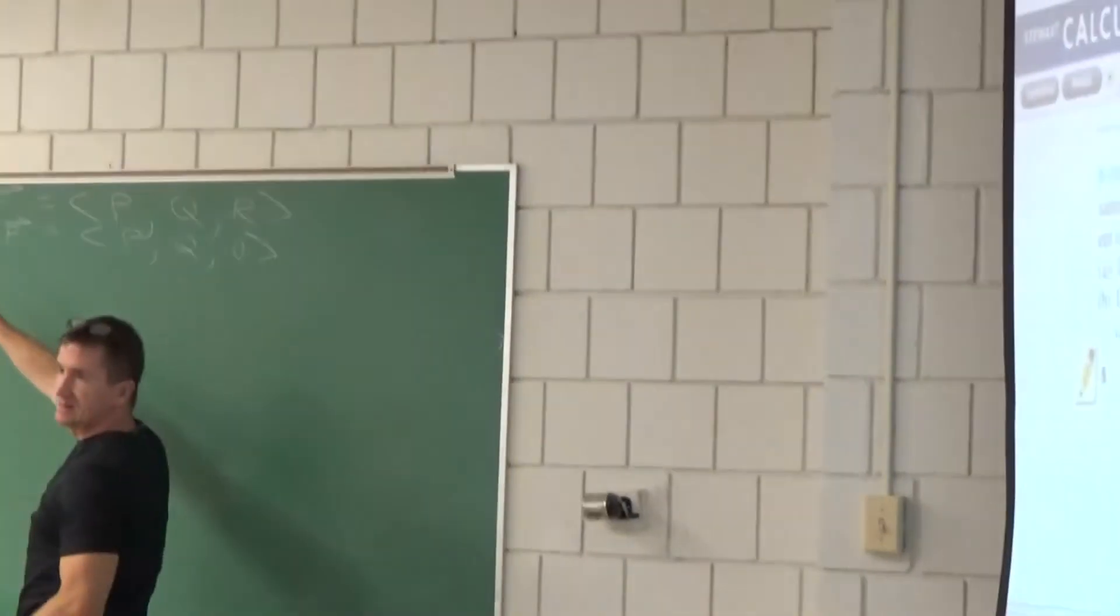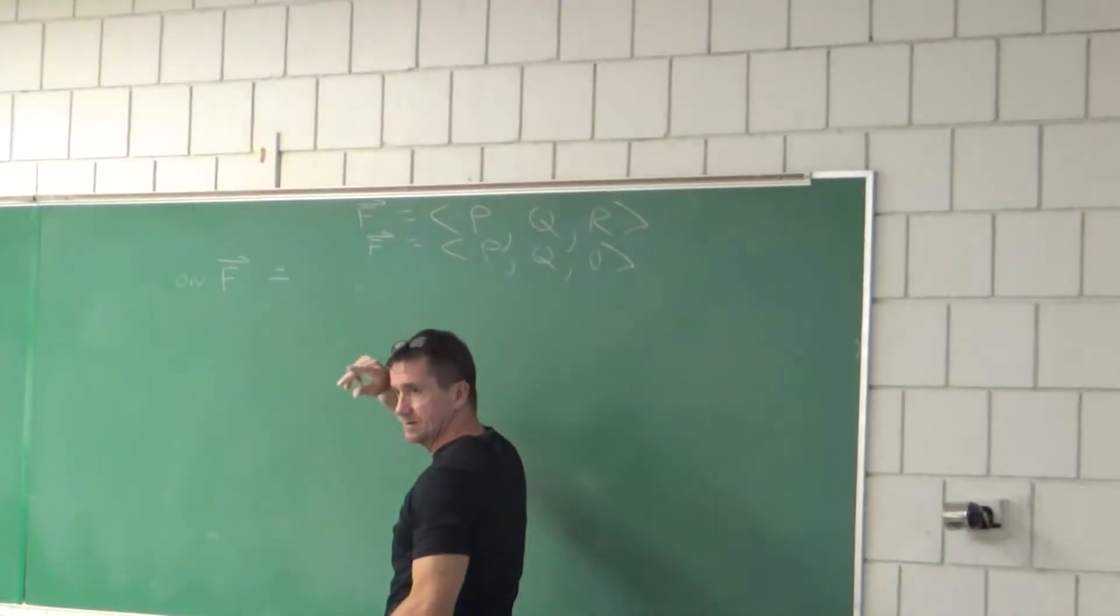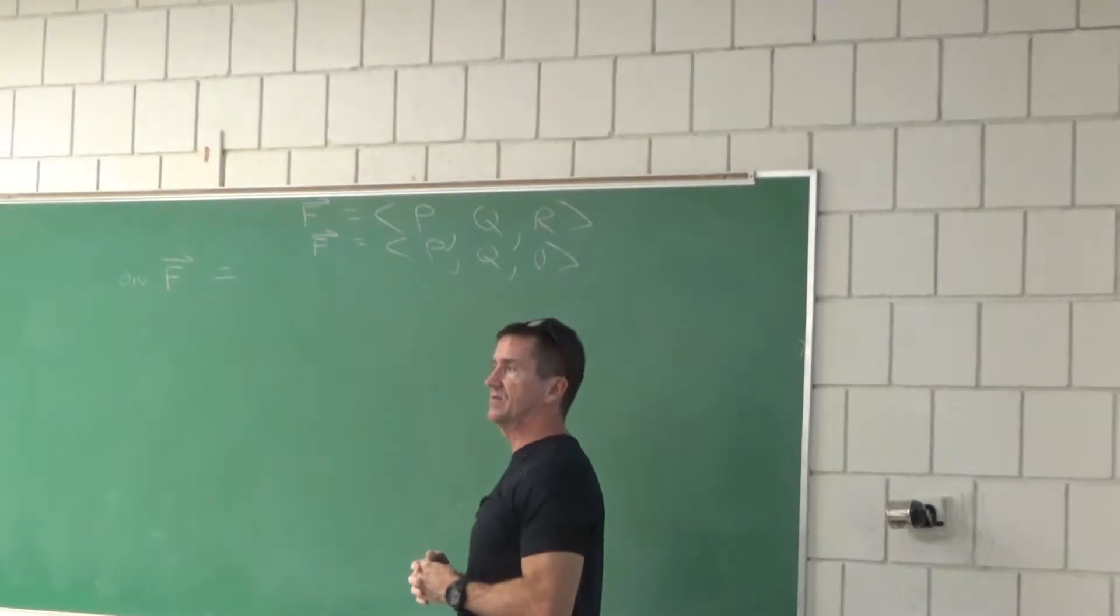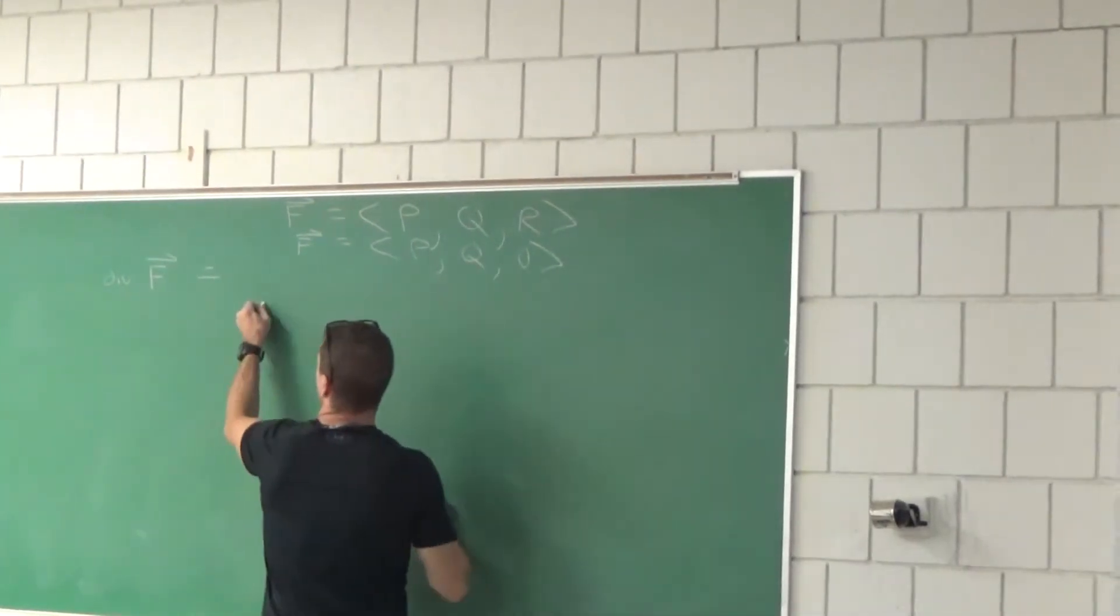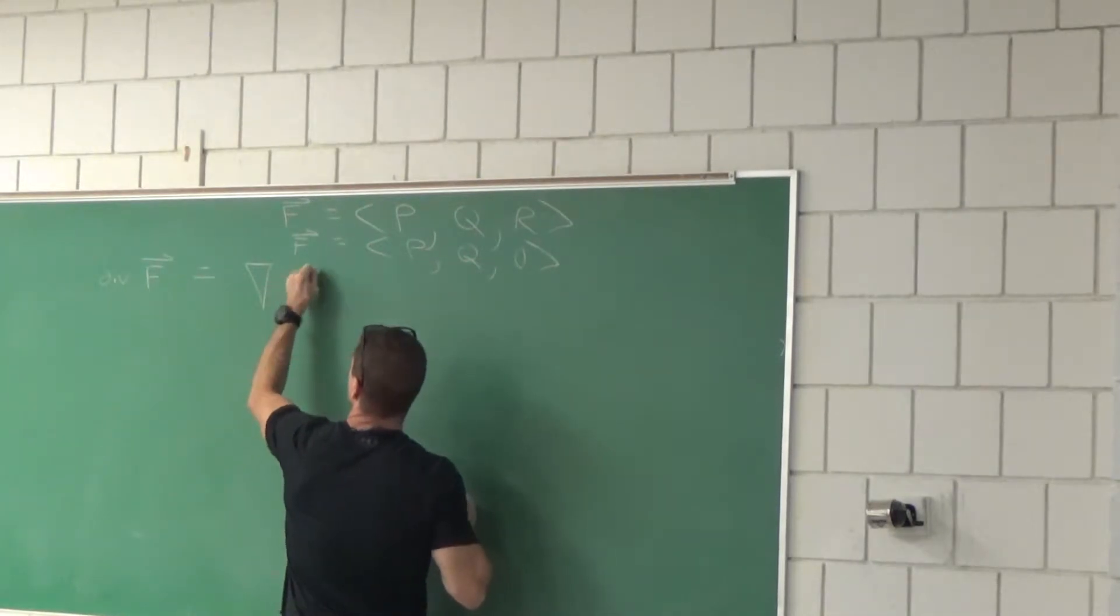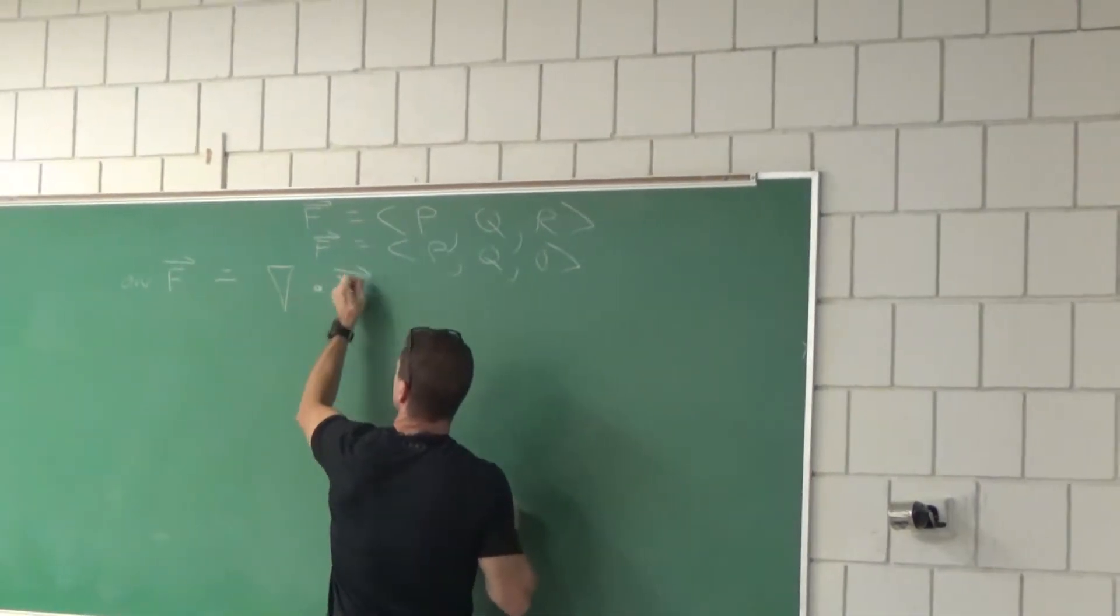And we've got to find divergence of f. So, let's start with the definition. What's the divergence of f? Divergence of f is del dot f.